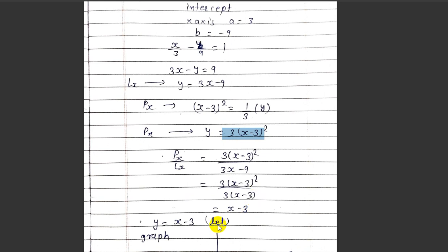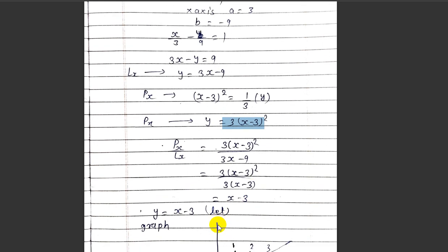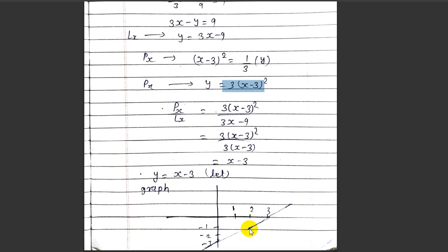So ultimately p(x) by l(x) simplifies to y = x minus 3. At x = 0, y = minus 3, and at y = 0, x = 3.